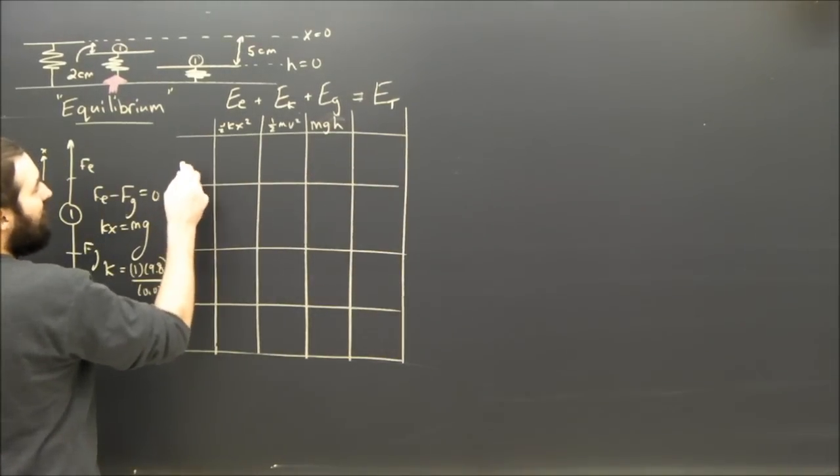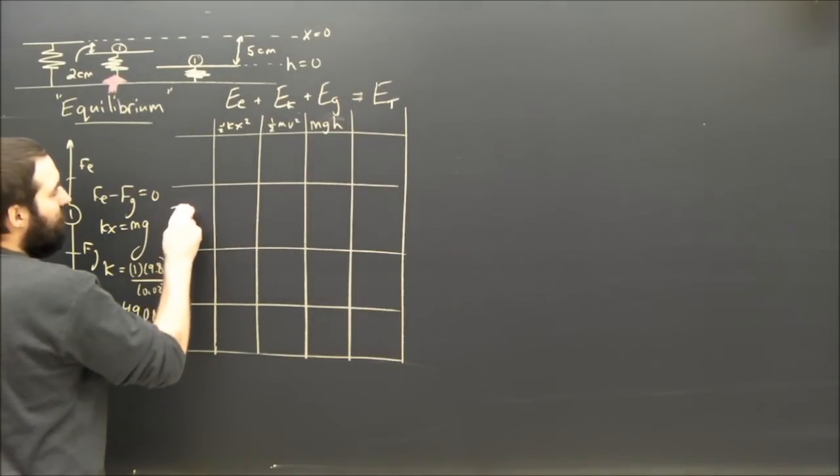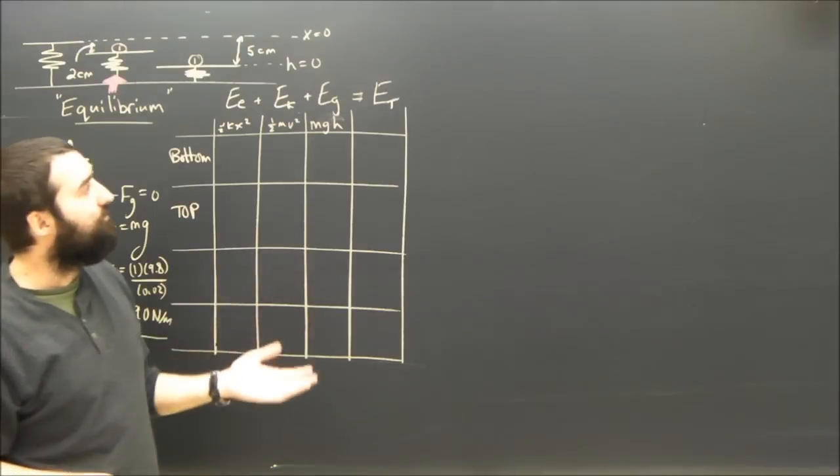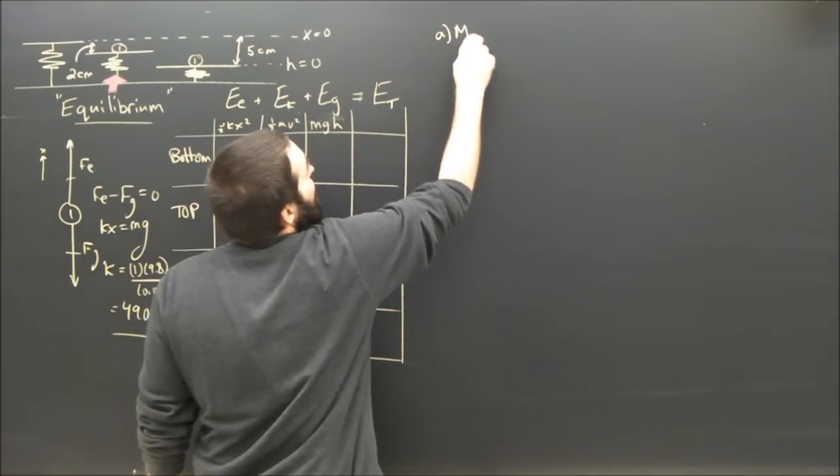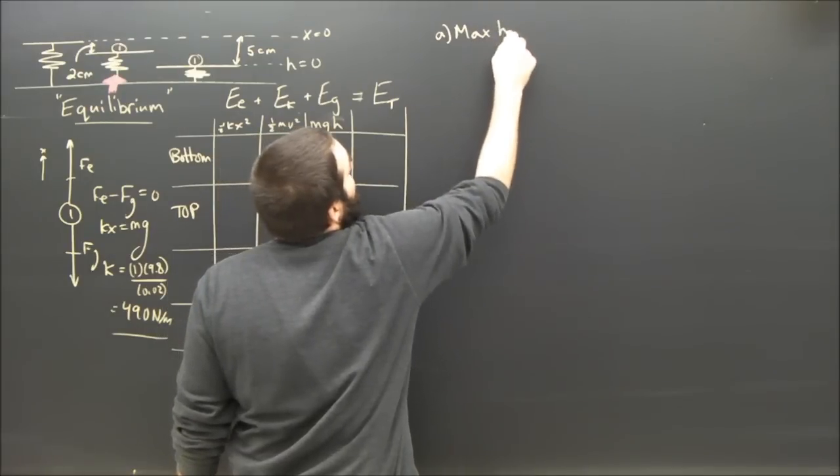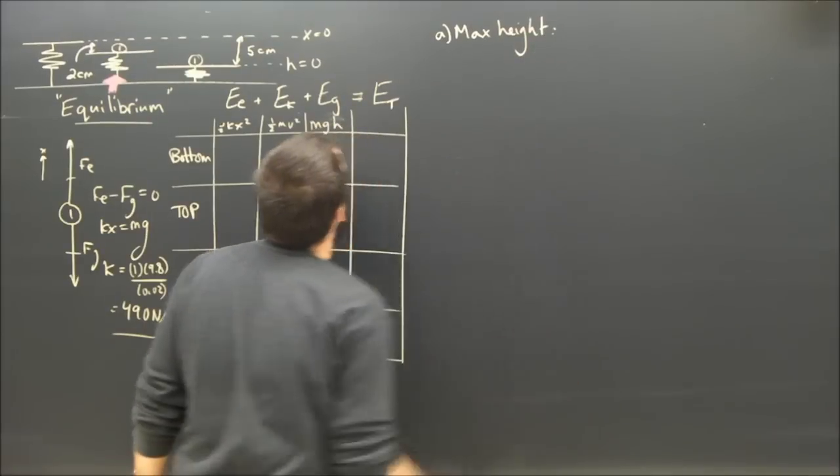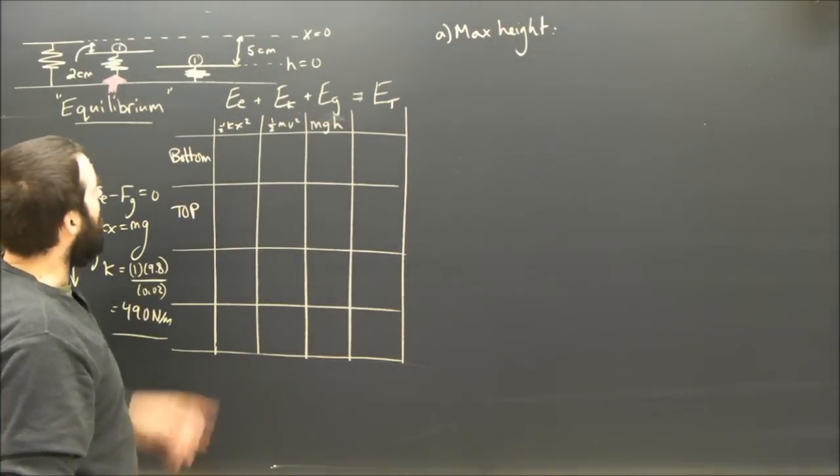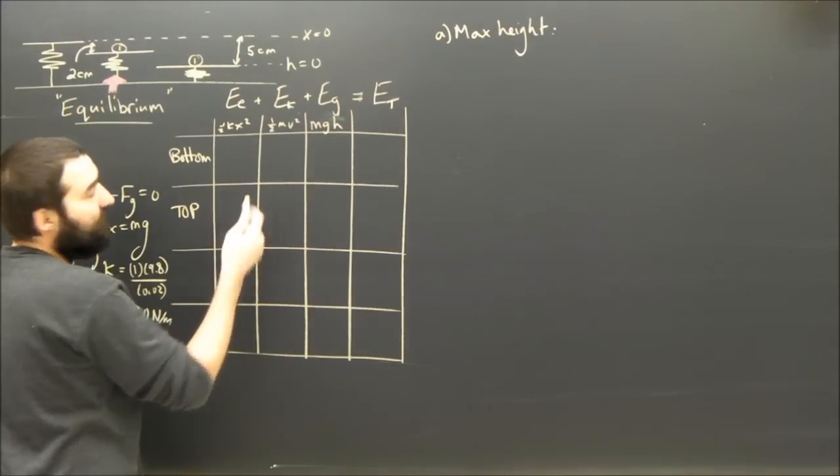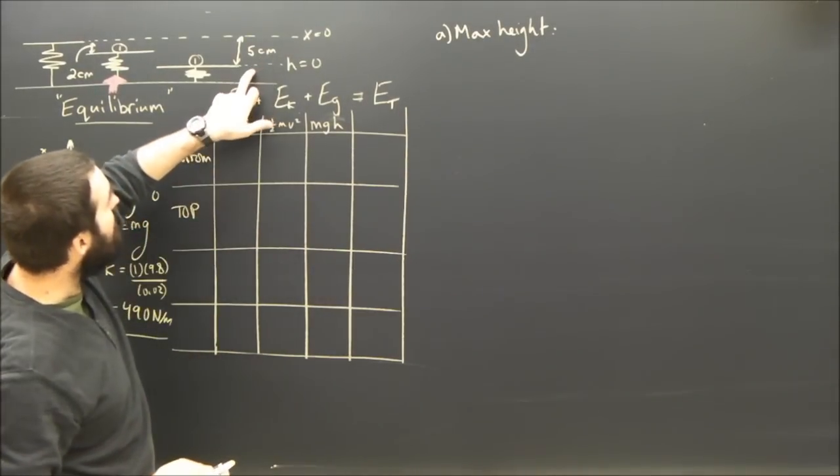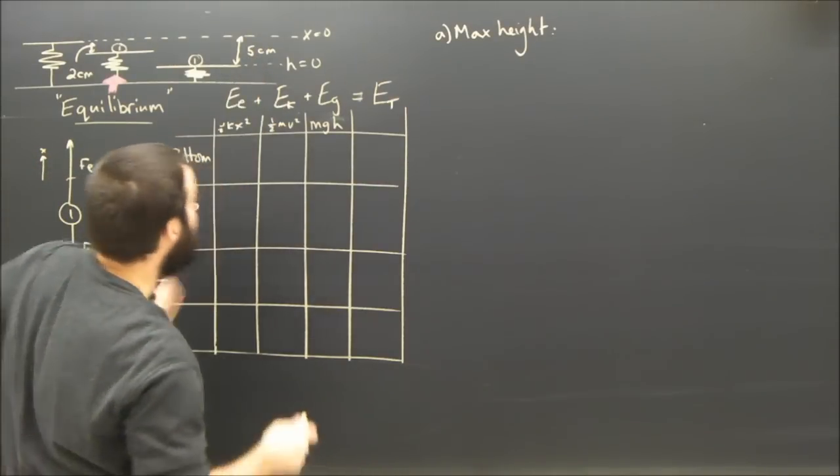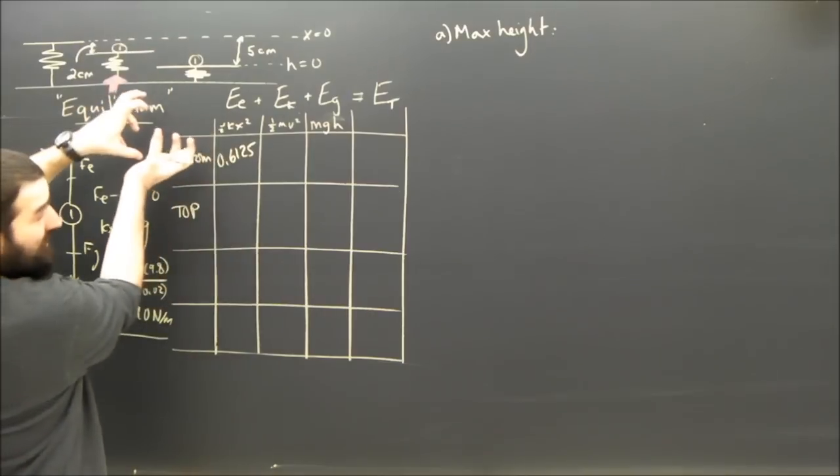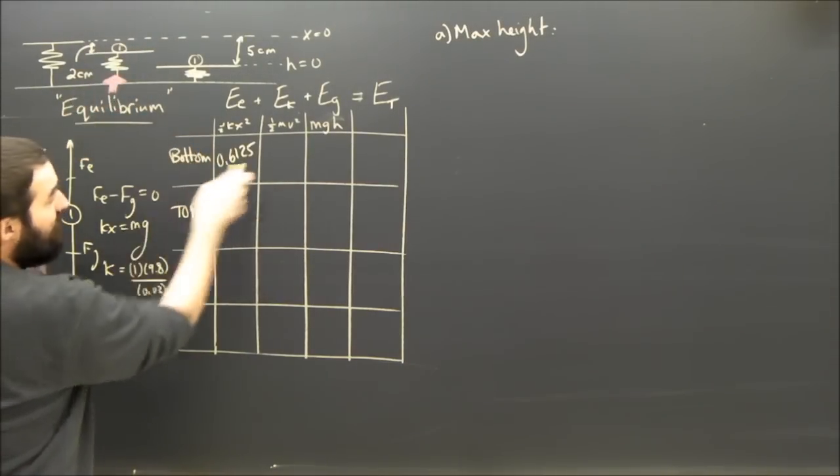So for part A, we're interested in the top, but we also need to know about the bottom because it's a conservation of energy problem. So for part A, the max height, we're going to look at our little equation here. What is the energy in the spring at the bottom? Well, it's a half KX. So if you do the math there with X being 5 centimeters, you'll see that it's 0.6125.